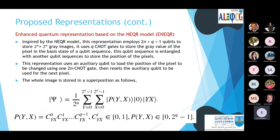The second proposed representation is called ENEQR, inspired by the NEQR model. It uses 2n+9 qubits to store 2^n by 2^n gray images. We use a controlled-NOT (CNOT) gate to store the gray value in the basis state of an 8-qubit sequence, entangled with a 2n-qubit sequence to store the pixel position. An auxiliary qubit is used to load the position of the pixel to be changed using a one-to-n CNOT gate, then the auxiliary is reset for the next pixel. The image is stored in superposition, where byx is the gray value encoded in a binary sequence of 8 bits.